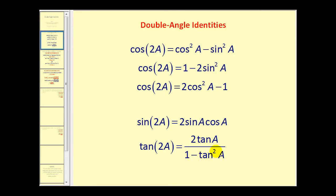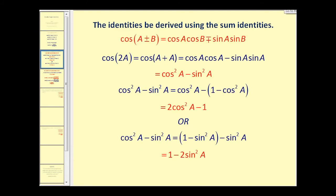Let's take a quick look at how these can be verified. If we take the sum identity for cosine and instead of using A plus B use cosine of A plus A, we can see how cosine two A is equal to cosine squared A minus sine squared A.